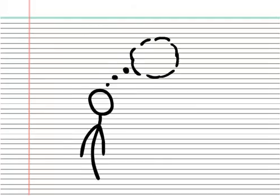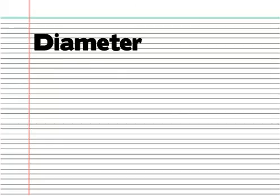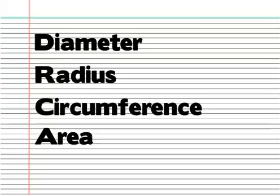Everybody remembers learning five key facts about circles. Diameter, radius, circumference, area, and chords.